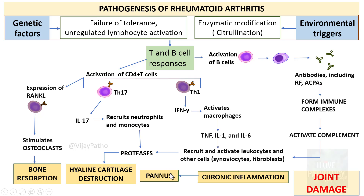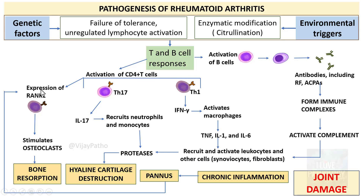Pannus is a proliferated tissue within the joint space comprised of synovial hyperplasia, edematous tissue, and infiltration by inflammatory cells. The inflammatory cells in the pannus also express RANK ligand, which further stimulates osteoclasts, leading to bone resorption. So the end result is hyaline cartilage destruction, bone resorption, and chronic inflammation forming pannus, which in turn causes further joint damage.